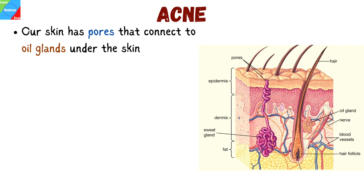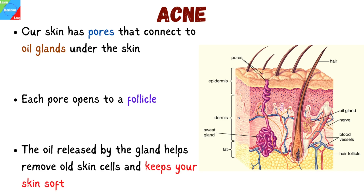Our skin has pores that connect to oil glands under the skin. Each pore opens to a follicle. A follicle contains a hair and an oil gland. The oil released by the gland helps remove old skin cells and keeps your skin soft.